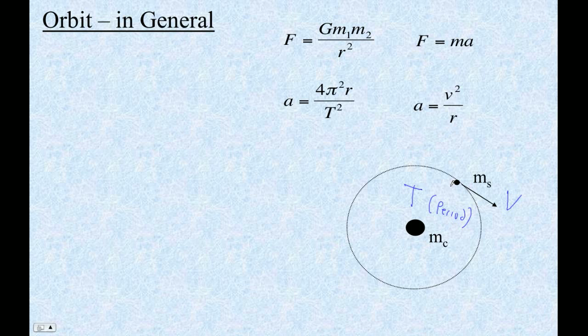And the basic idea behind orbit is that the force of gravity that's acting between these objects, that force that you find with this formula, that's what causes it to undergo a centripetal acceleration. So when we set up these equations for orbit, we're setting the force of gravity equal to a centripetal acceleration.